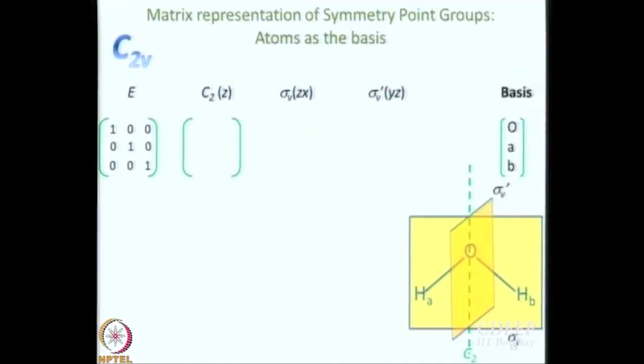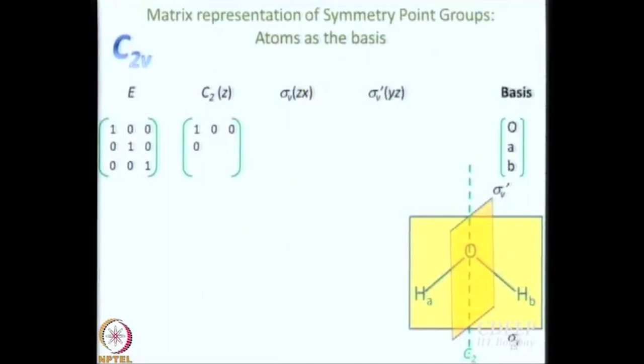What about C2? What happens in C2? O remains O — oxygen had better remain oxygen for every symmetry operation. If oxygen became hydrogen, either it is not a symmetry operation or you are a wizard of nuclear transmutation. Since we are not, oxygen remains oxygen. What happens to A and B? They interchange. So let us write the matrix: first row 1 0 0, second row 0 0 1, third row 0 1 0. The 1 has gone off-diagonal because A has become B and B has become A. Convince yourself that this is the correct matrix.